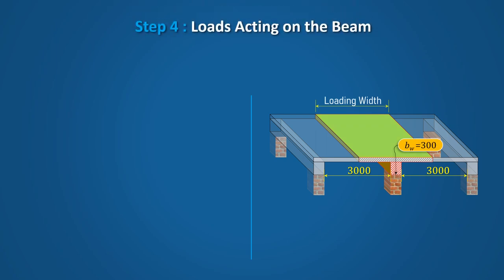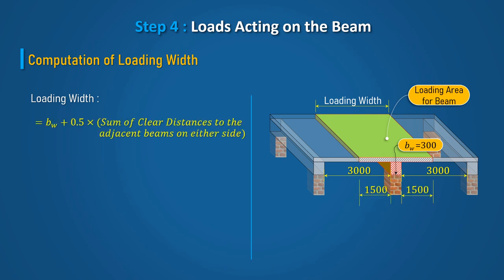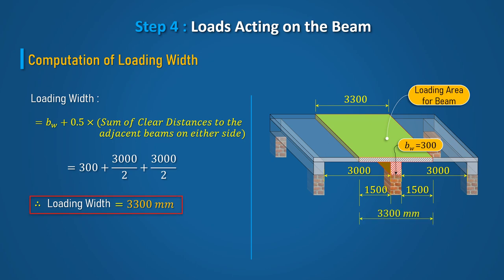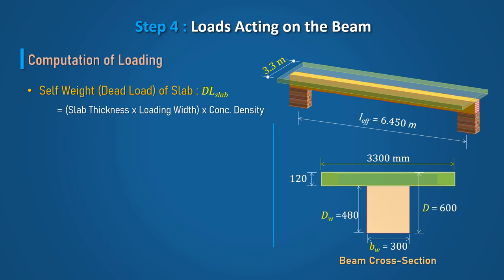In Step 4, calculate the loads acting on the T-Beam. The T-Beam takes uniformly distributed load from the slab, so we need to find the loading width from which load is transferred. The loading width equals the web width plus half the sum of clear distances to adjacent beams on either side, which is 3300mm. The self-weight or dead load of the slab transferred to the beam equals slab thickness times loading width times concrete density, which equals 9.9 kN/m.